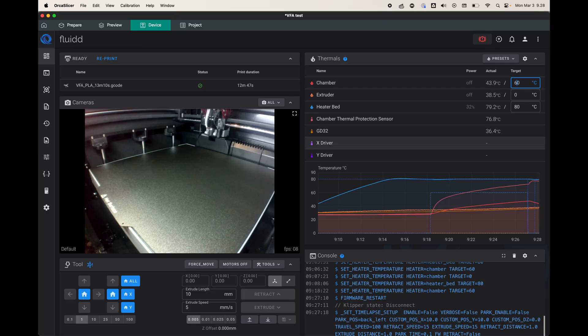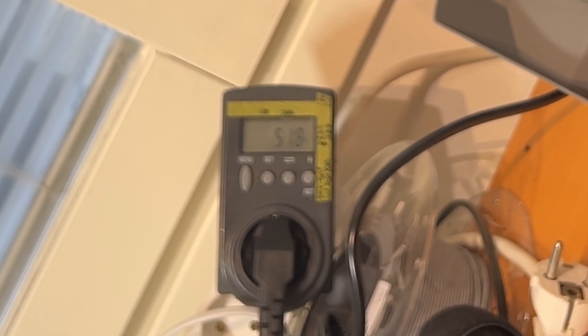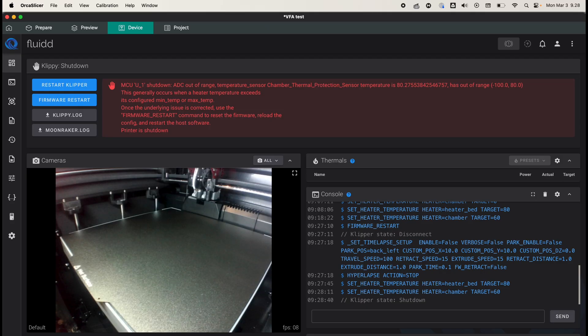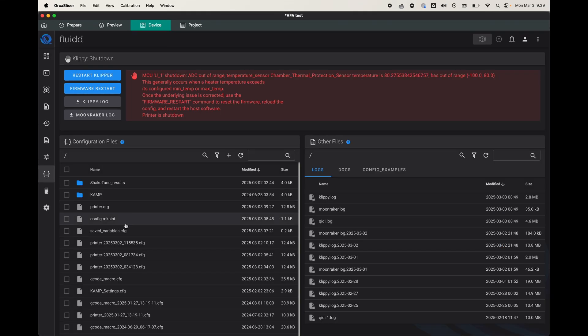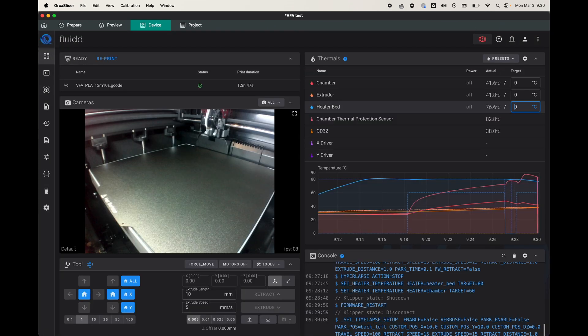And there we go, now we get MCU shutdown ADC out of range protection sensor. So it seems that 80 degrees is not enough for the protection sensor, so let's increase that value by going to configuration printer config thermal protection sensor. Let's put 100 in there, save and restart.